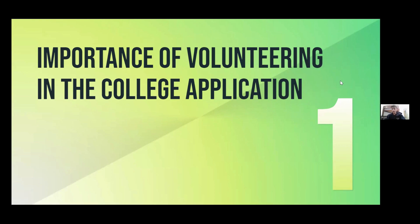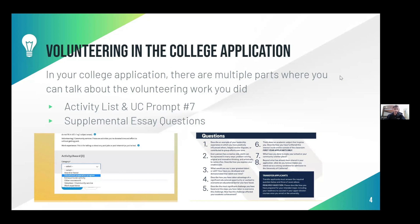So, importance of volunteering in the college application. When you're looking at a college application, there are multiple parts where you can talk about different volunteer work that you have done. For example, in the activity list, where you can mention all the different extracurriculars that you have done, alongside UC prompt number seven. There's also the supplemental essay questions, where you can talk about one particular activity that you really enjoyed or something that was very close to you during your high school time.